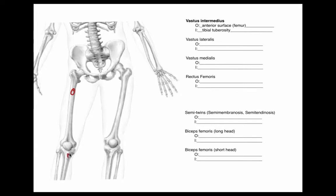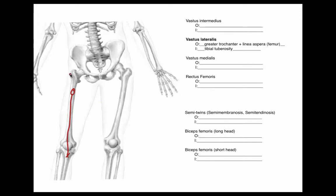Next is vastus lateralis, and this has two different origin points. One is the greater trochanter — the large bump at the top of the femur — and the other is the linea aspera, which is on the posterior side of the femur so we can't see it here. I'll draw this part blending in, inserting again on the tibial tuberosity, with fibers shown coming from the linea aspera. It's called lateralis because it's on the lateral side of the leg.